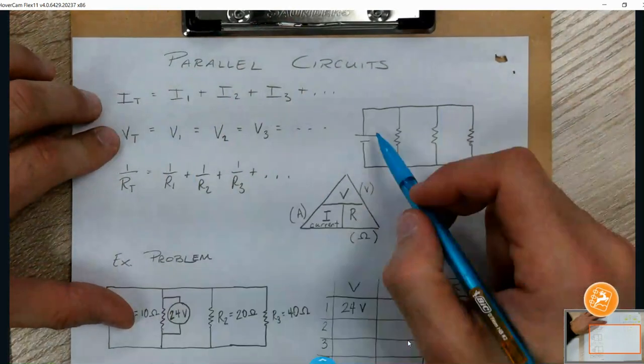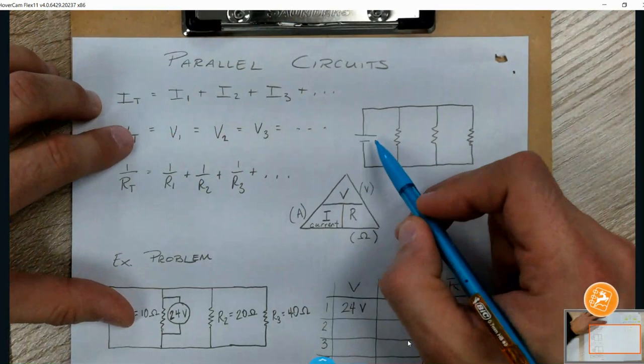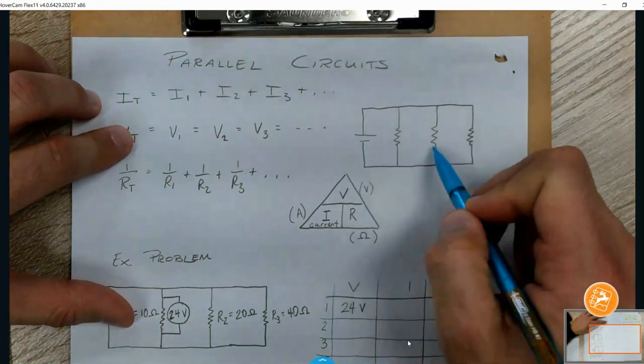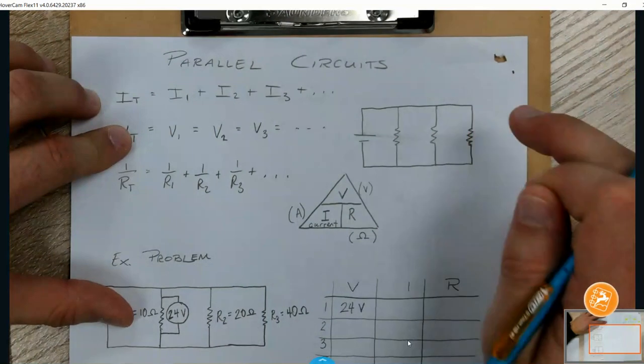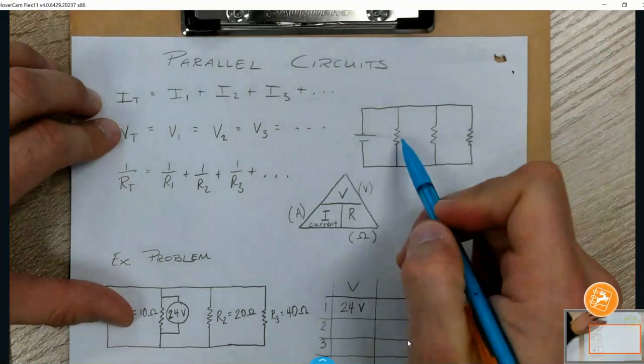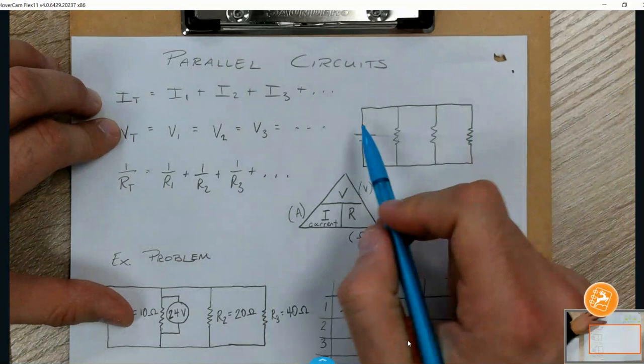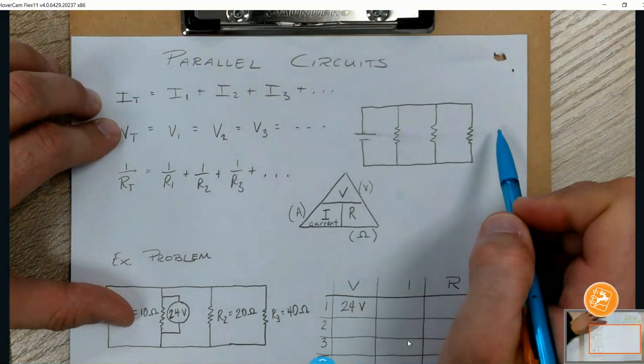The voltage, whatever our battery is, that's normally our total voltage. Because each resistor has its own pathway back to the battery, all the voltages are going to be the same. So when you know a voltage across one resistor or across the battery, they're all going to be the same.